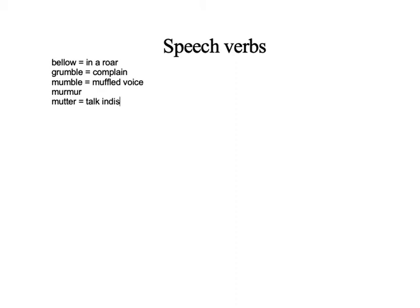Next is murmur, which is very similar to Spanish 'murmurar,' so you know this one. After that we have mutter. When you mutter something, it's when you talk indistinctively — when someone says something and you cannot really understand what he or she is saying. You cannot figure out what words are coming out of their mouths. So you say that person is muttering.